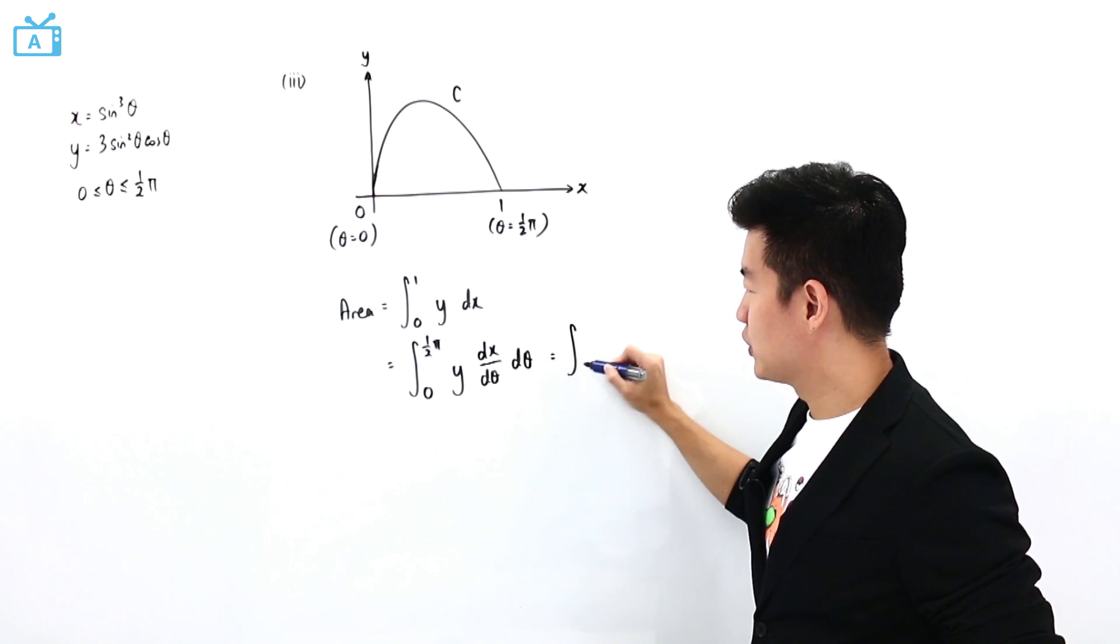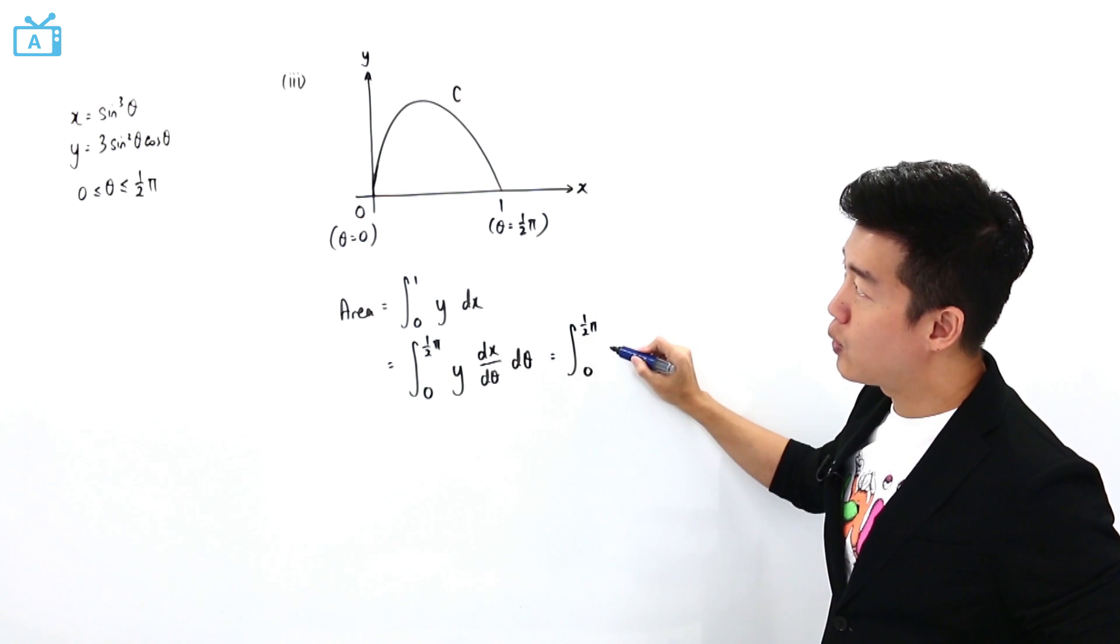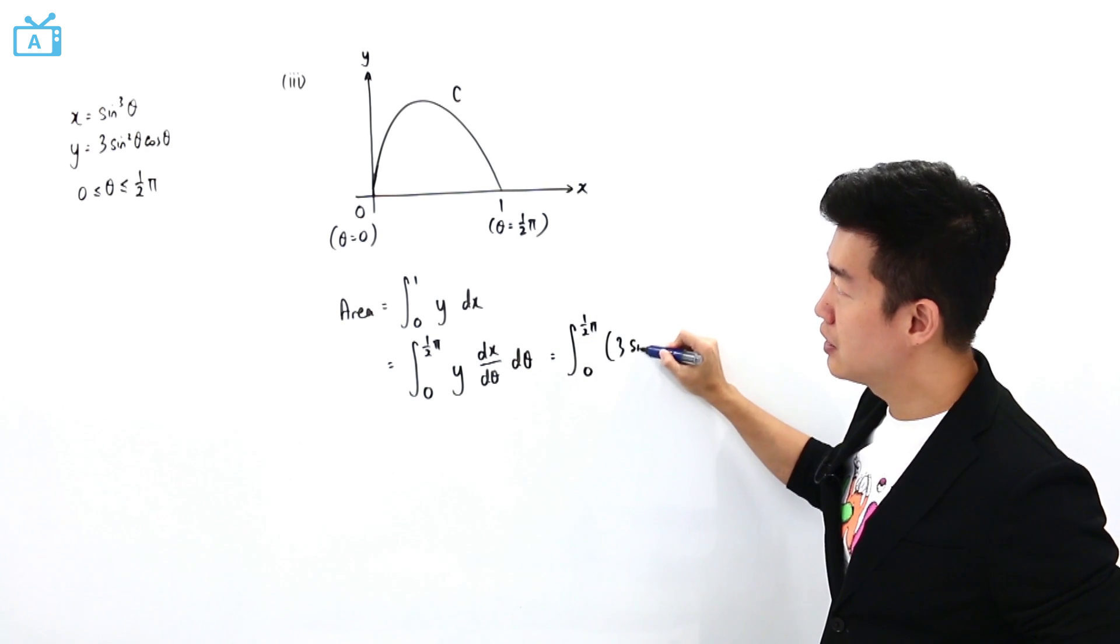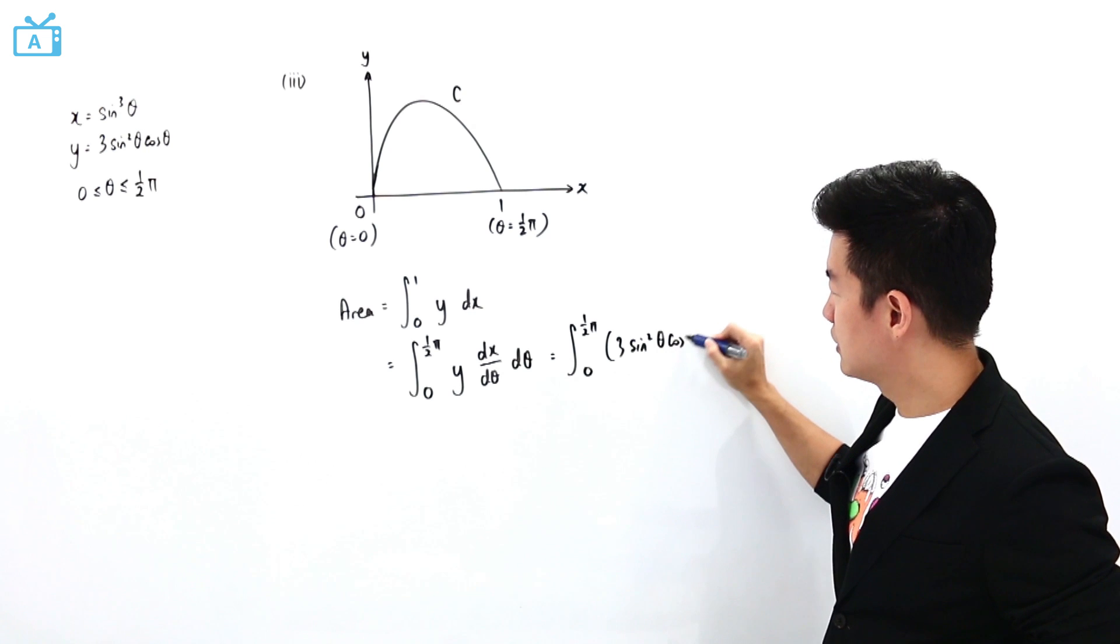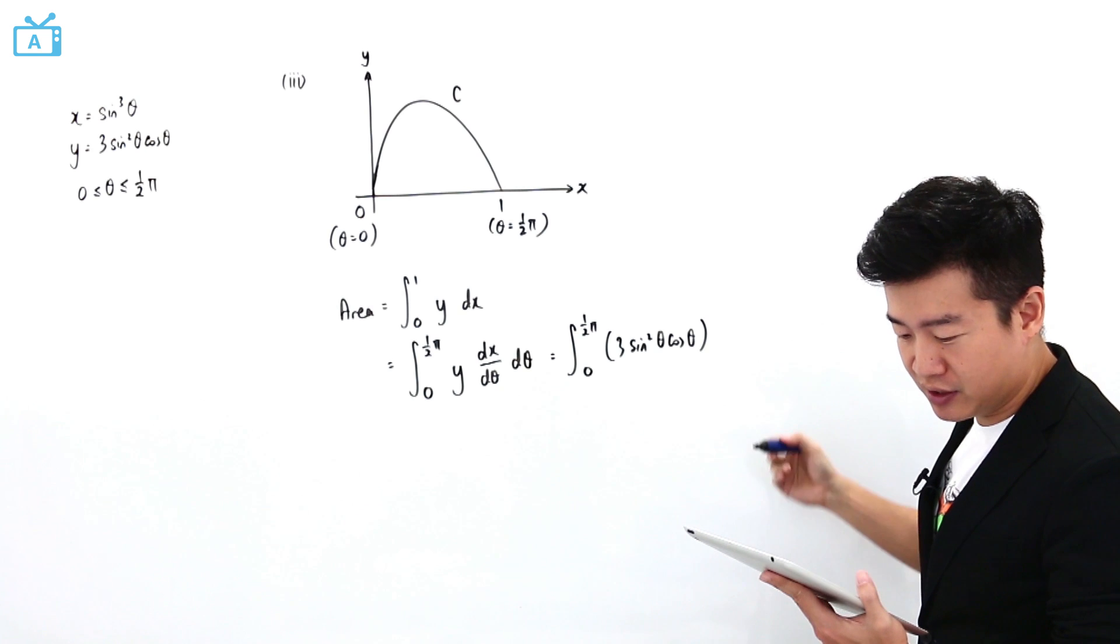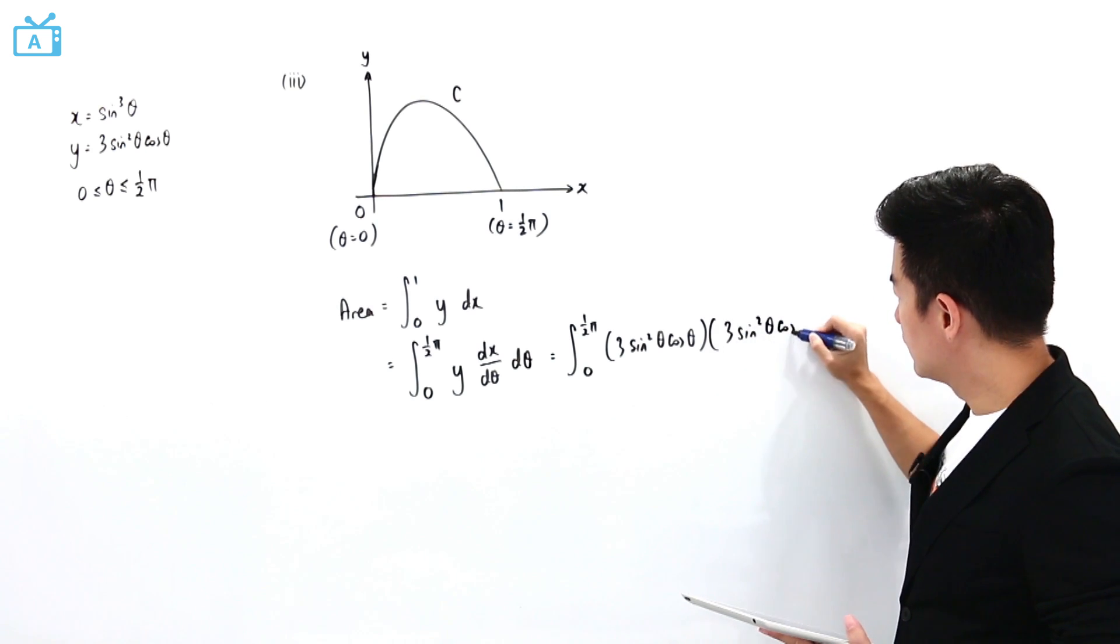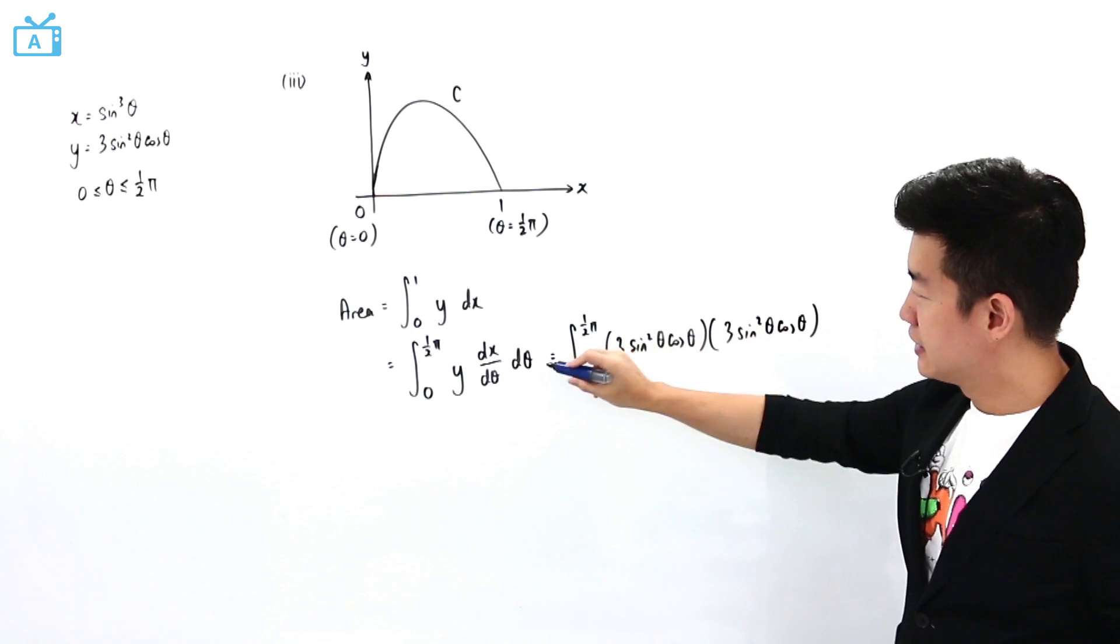Which means that I'm going to find this area as integration from 0 to half pi of y, which is 3 sine squared theta cosine theta. And dx d theta, we have already found it in the previous part of the question, that is 3 sine squared theta cosine theta d theta.